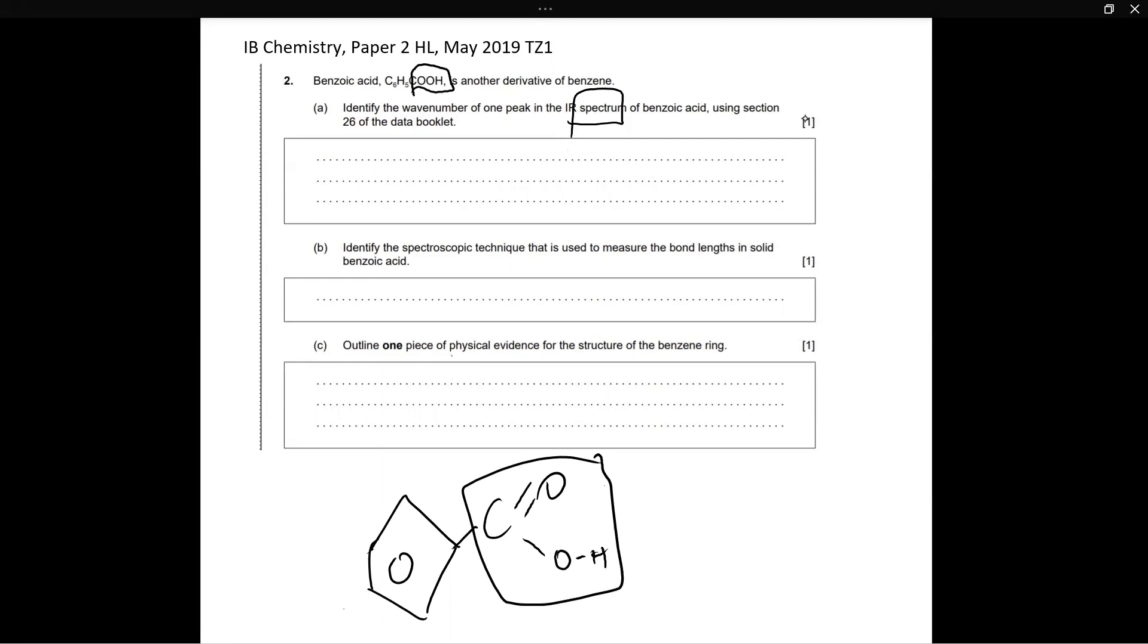So now if you look at your data booklet, you'll see that there is a C double bond O. The carbon double bonded to oxygen has a wave number of 1700 to 1750 centimeters. And then the bond of oxygen to hydrogen, which is also the hydroxyl group present in the carboxylic acid, has a wavelength between 2500 and 3000 centimeters.